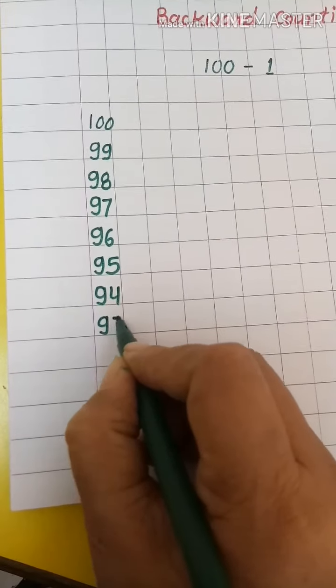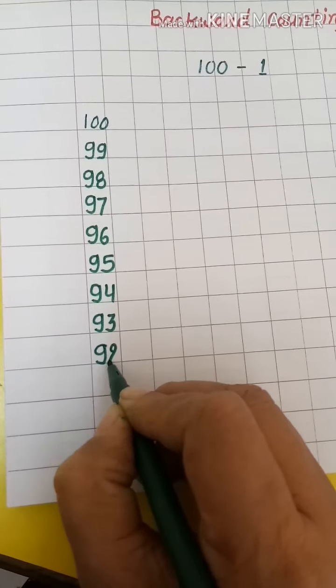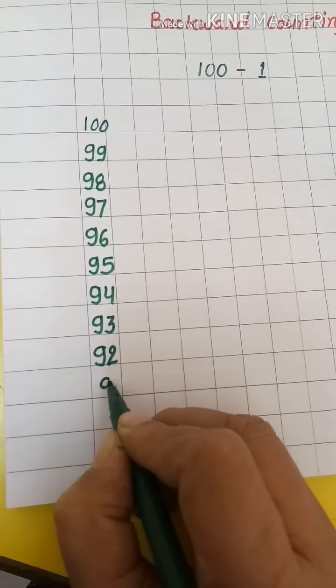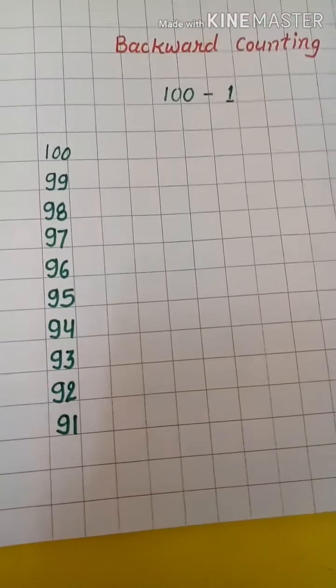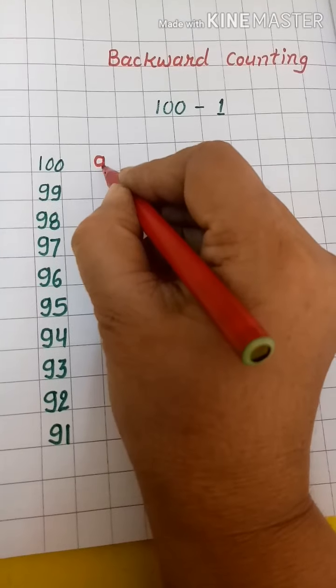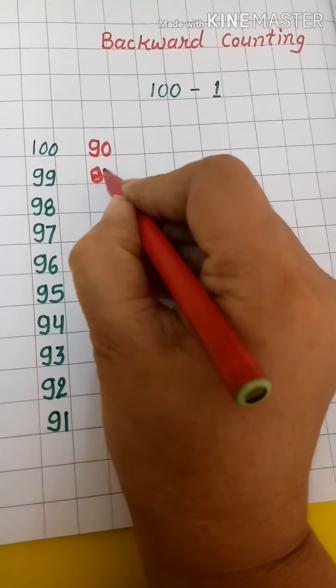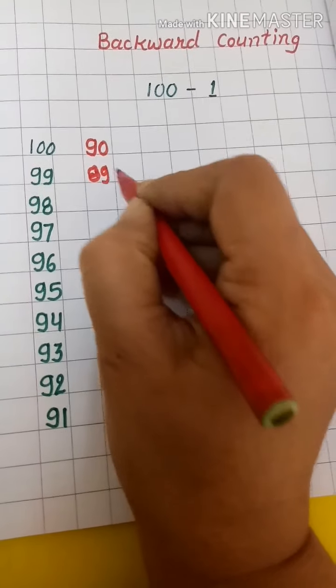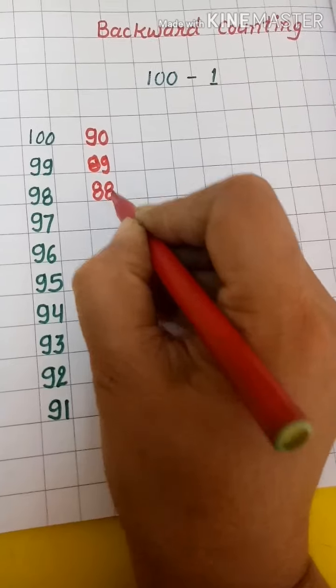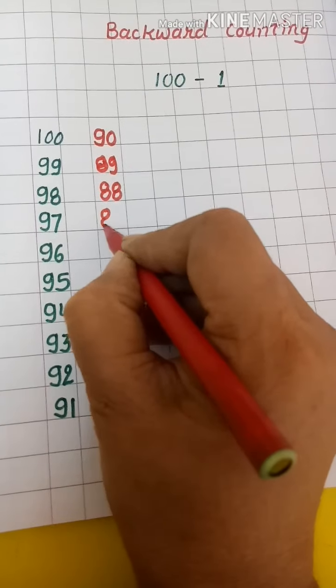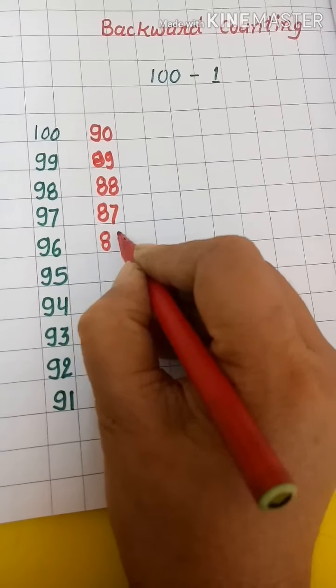Ninety-three, ninety-two, ninety-one, next is ninety. Eighty-nine, eighty-eight, eighty-seven, eighty-six.